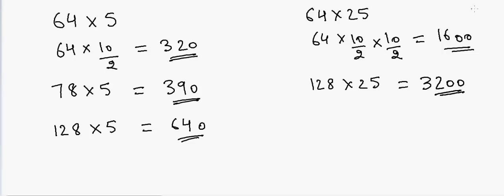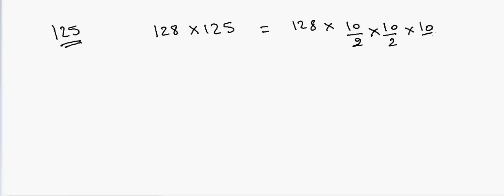Let's go to one more trick. If we have to multiply by 125, how do I multiply by 125? I'll take an example: 128, I want to multiply by 125. That can be written as 128 times 10 by 2 times 10 by 2 times 10 by 2. We have to divide 128 by 2 three times, or we can divide it by 8.